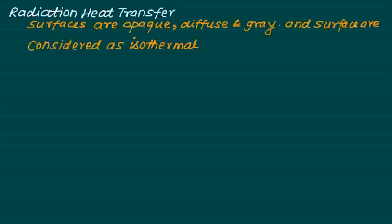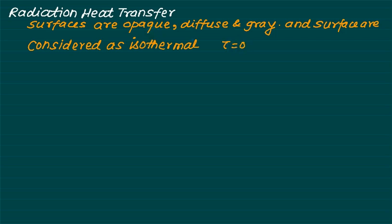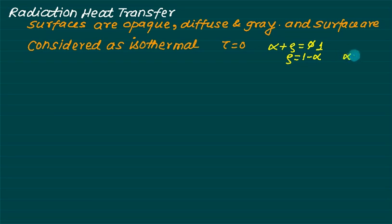In this lecture we will discuss radiation heat transfer between two bodies which are opaque, diffuse, gray, and isothermal. For opaque surfaces, transmissivity τ equals zero, so α + ρ = 1. Since absorptivity α equals emissivity ε for gray surfaces, we can write ρ = 1 − ε.